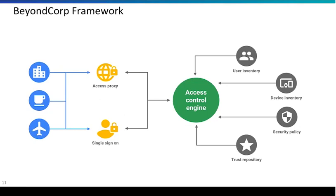We happen to know the serial numbers of all those components. If somebody comes in with a device that is a Google device but the hard drive is different or the DRAM is different, we flag that as something that needs to be followed up on. We also have a trust repository — we know IP addresses and devices that are malicious or sketchy, and we block access from those. Somebody might be coming in from a proxy to try to mask an IP address, and we have what we think is the world's comprehensive list of proxy IP addresses, so we can block access from those as well.